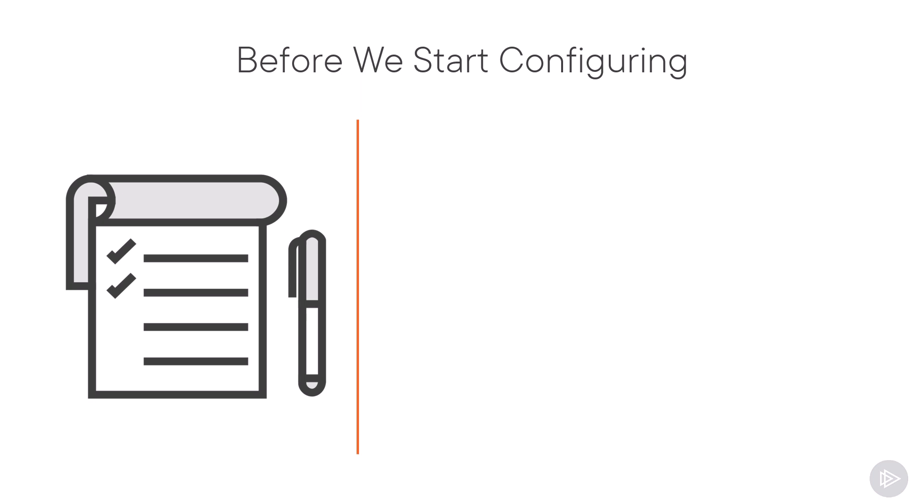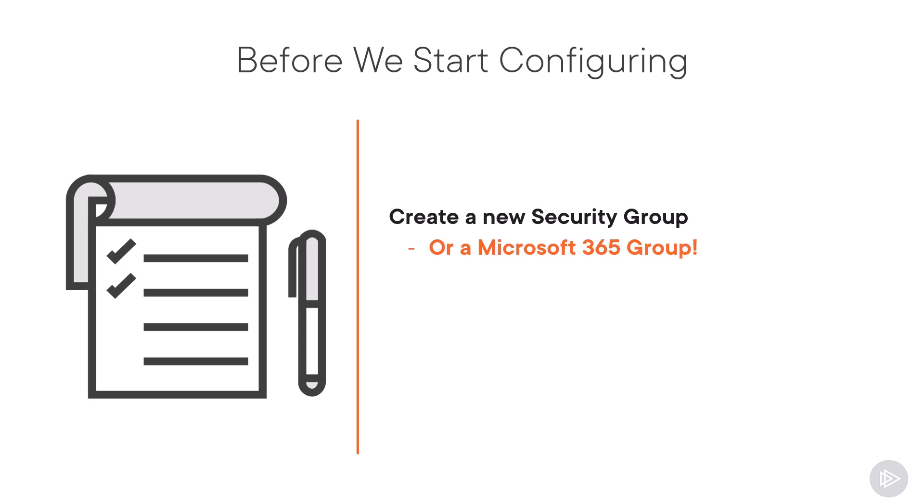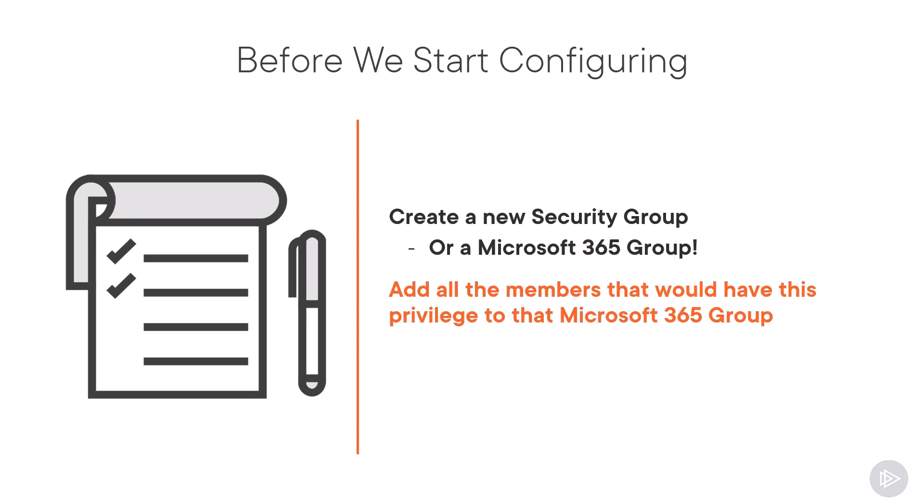Before we go into the configuration options, the first thing you will have to do is to create a new security group or a Microsoft 365 group, which we will use to say this is the group that is allowed to create Microsoft 365 groups inside the organization. After you create it, make sure you add all the members that will be allowed to create a Microsoft 365 group inside.